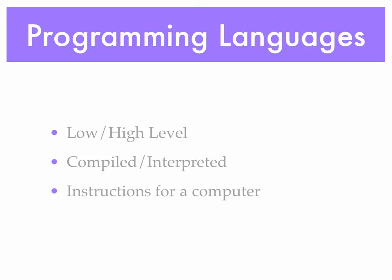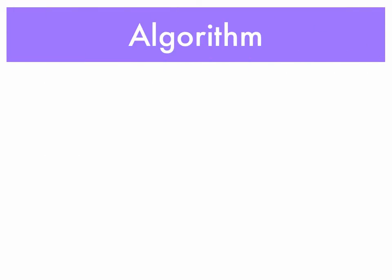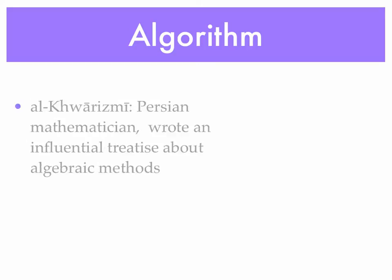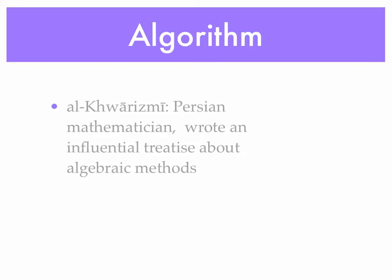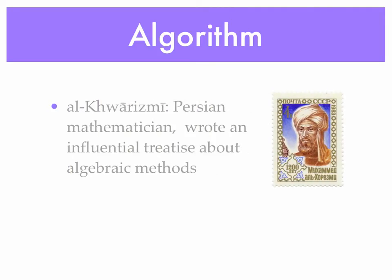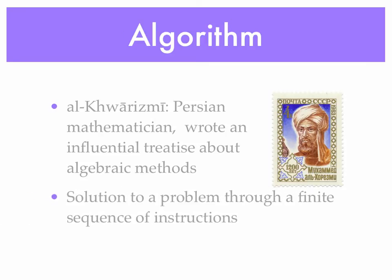Whatever language you're using, programming languages are just instructions for a computer. And when we talk about instructions for a computer, we're talking about an algorithm. The term algorithm comes from the name of a Persian mathematician who wrote a very influential book. His name — I shall try to pronounce — was Al-Khwarizmi. He's got a stamp in his honor. An algorithm is defined as the solution to a problem through a finite sequence of instructions — a given number of instructions that give us a solution to a problem.